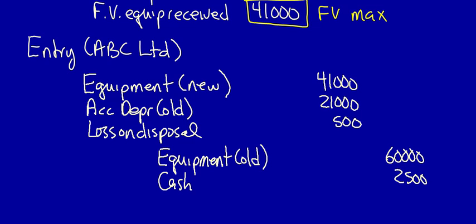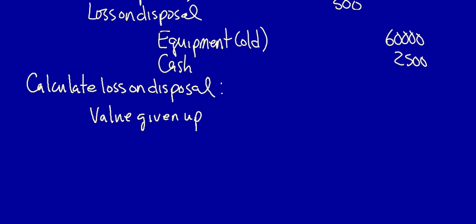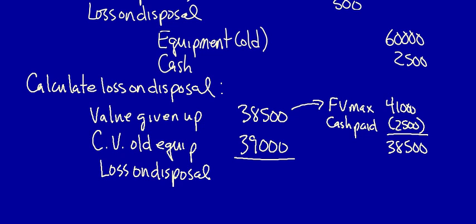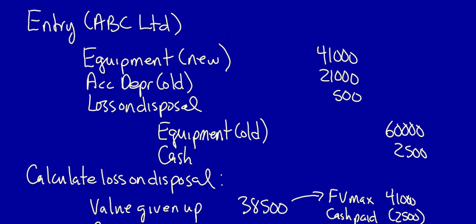Can we calculate the loss on disposal mathematically? Yes — we just did a plug but we can also calculate it. We look at the value given up: $38,500. This is calculated as the fair value maximum of $41,000 less the cash paid of $2,500, because when we gave up the asset, we didn't give up a full $41,000 — we paid a portion in cash. Compare that to the carrying value of the old equipment, $39,000. The difference is the loss on disposal of $500. Note that an exchange without commercial substance will only ever show a loss, never a gain, and a loss will only occur if the fair value maximum rule is reached, as it was in this case.